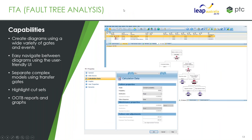Similar to RBD, fault tree analysis conducts analysis on a certain event or the events leading up to it. We can create diagrams using a wide variety of gates and events — a combination of static and dynamic — all available out of the box, which can simply be dragged and dropped into the environment. We can navigate around and jump between different diagrams using context-sensitive menus, and separate out complex FTA diagrams using transfer gates. When a structure becomes overly complex and difficult to navigate on a single page, we can break those branches down for easier navigation.